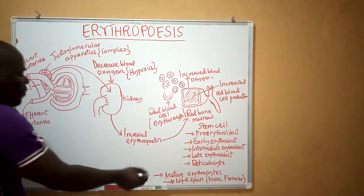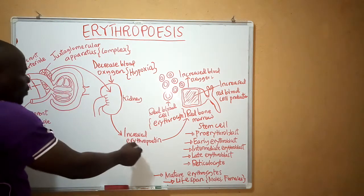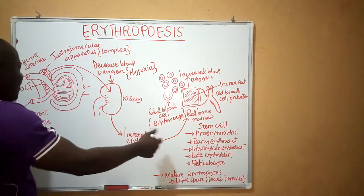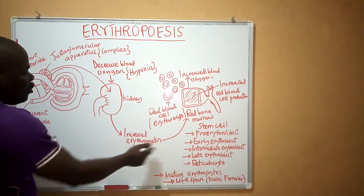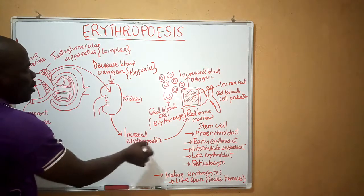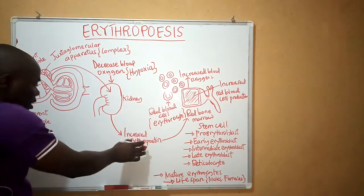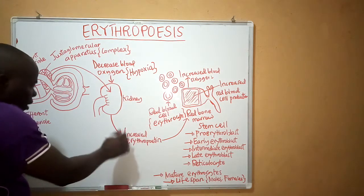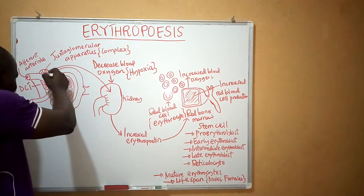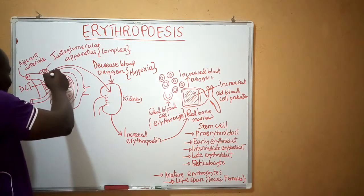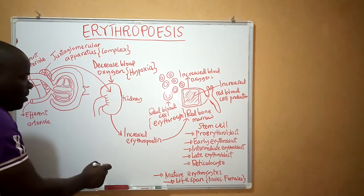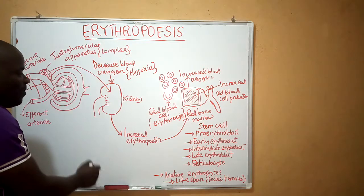Erythrogenin is secreted and will act on a plasma protein known as erythropoietinogen. Erythropoietinogen is eventually converted into erythropoietin. After being produced, erythropoietin will be transported via general circulation or through blood circulation.